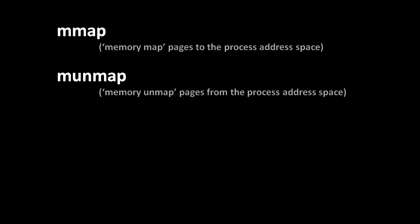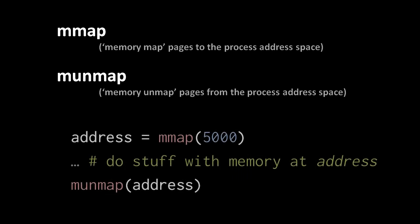To allocate memory in a process, the process should invoke the mmap system call — mmap, short for memory map — which adds some number of pages into the process address space and maps those pages to actual addresses in physical memory. Here, for example, we invoke mmap and pass in an argument of how many bytes we would like to allocate. We don't specify which bytes we want because it's left up to the operating system to find a chunk of contiguous bytes somewhere in the address space and return the address of the first byte of that chunk.